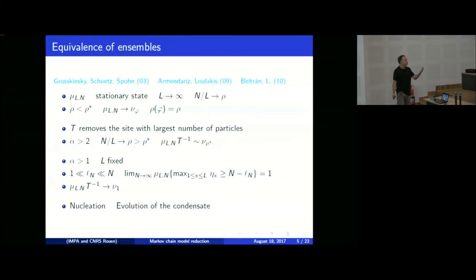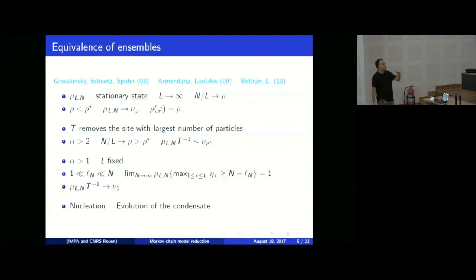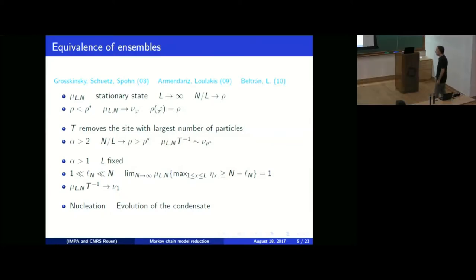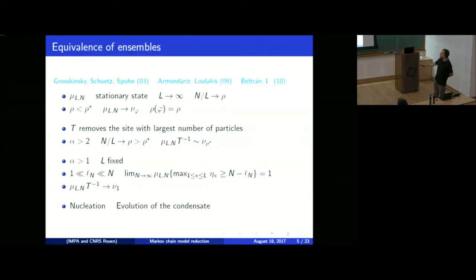You have a conserved quantity: the total number of particles. L represents the total number of sites and N the total number of particles. When you fix the total number of particles, you have an irreducible Markov chain with a unique stationary state, which I represent by mu_{L,N}. We would like to describe the behavior of this stationary state in the thermodynamic limit: I take L growing to infinity, fix a density rho, and send both L and N to infinity so that N/L converges to rho.